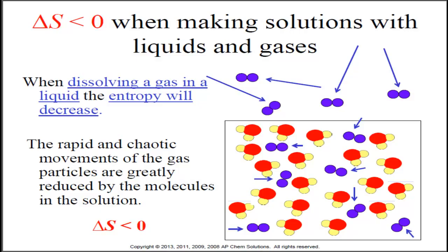Gases are going to have high entropy values. When they're dissolved in a liquid, their entropy is greatly reduced, making that delta S negative. The rapid movements of the gas particles are greatly reduced as they dissolve in liquids.